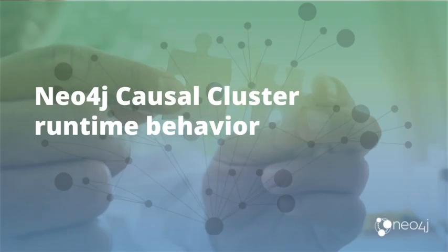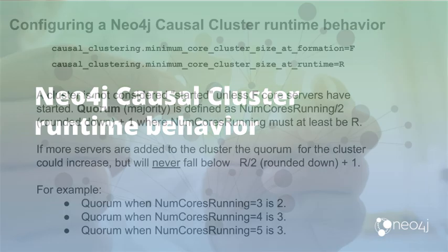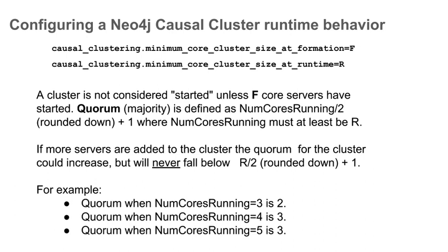In this video, you will learn how Neo4j's causal cluster's fault tolerance is managed using a quorum for a cluster. When you configure your systems for Neo4j causal clustering, you can specify two properties for each system in the cluster: the minimum number of core servers needed to start the cluster, and the minimum number of core servers needed for the cluster to be operable for fault-tolerant updates at runtime.